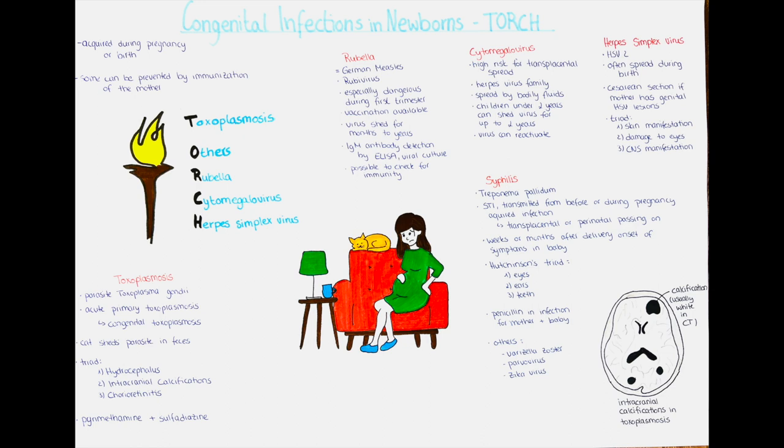To recap the TORCH acronym: T for toxoplasmosis, R for rubella, C for cytomegalovirus, and H for herpes simplex virus. The O stands for others, so now we'll briefly mention some of the other congenital infections. An important one to know is syphilis, caused by the bacterium Treponema pallidum. The mother can transmit the infection whether she acquired it before or during pregnancy. She contracts syphilis, usually as a sexually transmitted infection, and can then transmit it either transplacentally in the uterus or during delivery.